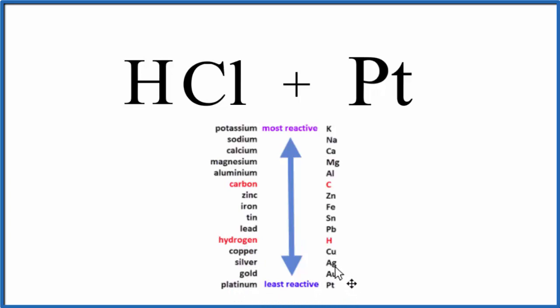So the ones on the bottom of the chart, they're the least reactive, the ones on the top, they're the most. Platinum's on the bottom, it's the least reactive. And since it's below hydrogen, it can't come in and displace hydrogen in a single displacement reaction.